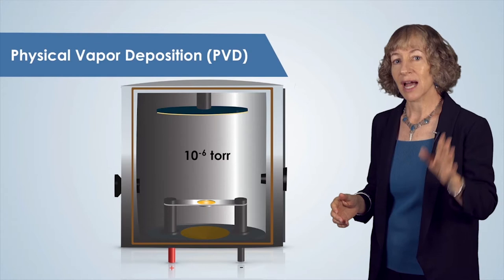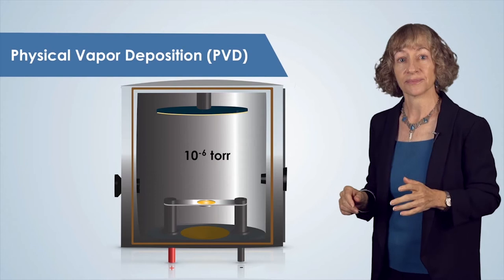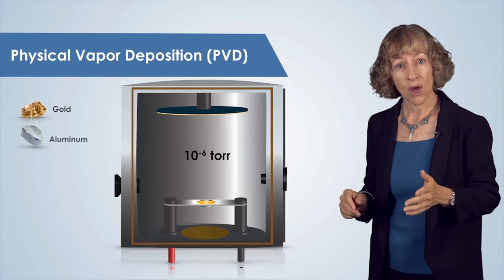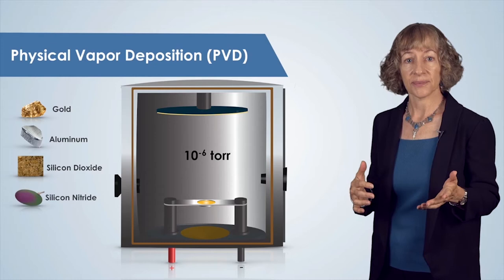We also require high-purity source materials, typically 99.999% pure — five nines — or even better. These high-purity materials include metals, such as gold or aluminum, or an insulator or dielectric, such as silicon dioxide or silicon nitride. These are available by purchase from many sources.